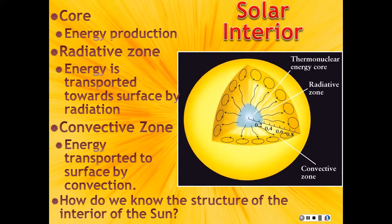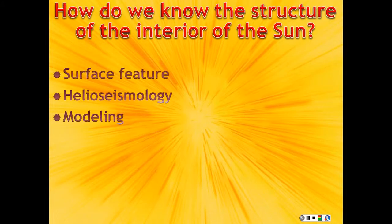But we can't see inside the Sun, it's opaque. We'll come back to the idea of things being opaque or transparent shortly. But how do we know what the structure is? Well, there are several different things we do. Some of it is manifested on the surface of the Sun. So by looking at the surface, we can see what's going on.